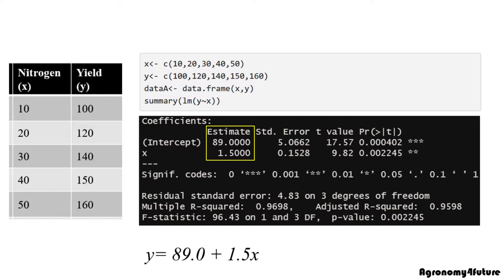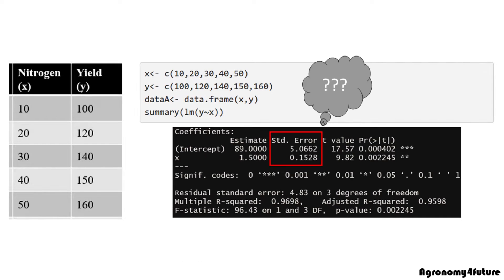If you followed my previous posts, you will get the model equation: y is 89.0 plus 1.5x. Now, our next interest is how to calculate standard error in the intercept and slope.